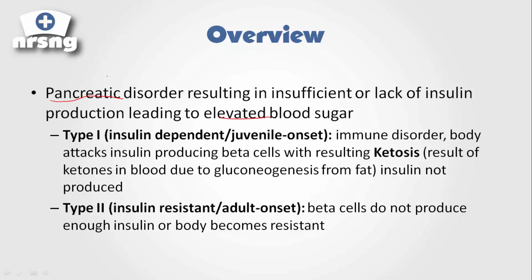Insulin is produced in the beta cells of the pancreas. With type 1 diabetes — also known as insulin dependent or juvenile onset — this is an immune disorder. The body actually attacks those insulin-producing beta cells, and because these patients are not producing insulin, they can develop ketosis or diabetic ketoacidosis.